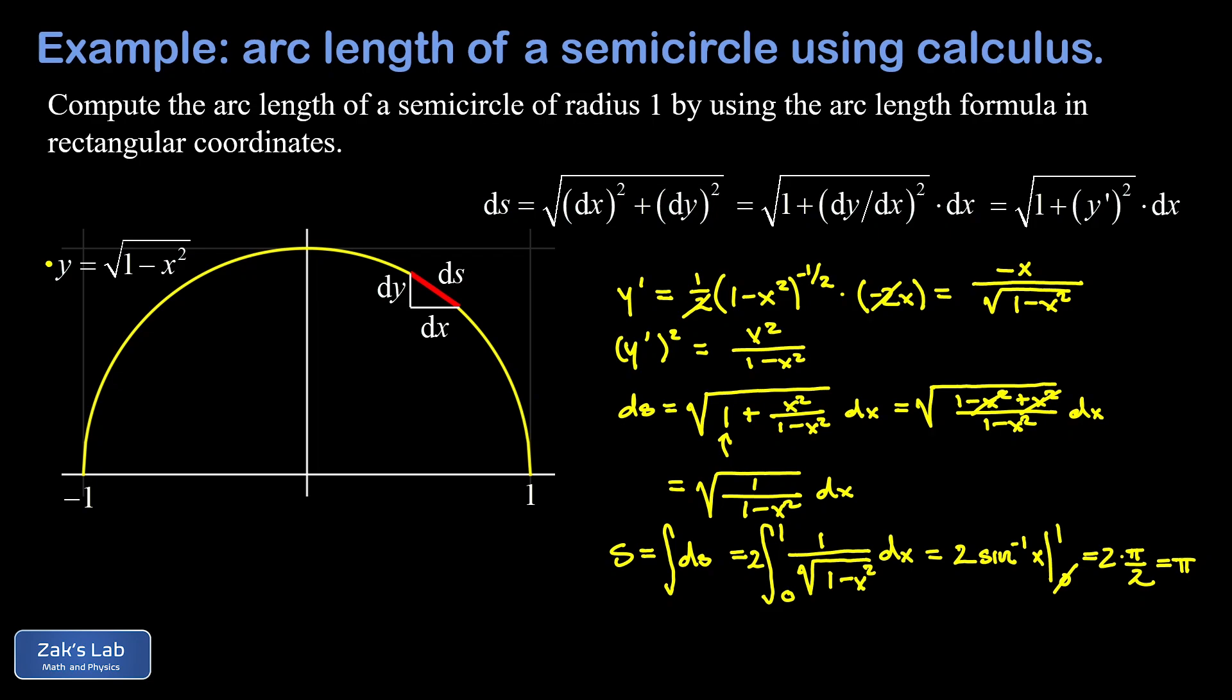Now we should check this against what we already know about geometry. We know the circumference of an entire circle is two pi r. Well, this time we're dealing with a circle that has a radius of one. And we're dealing with only one half of the circle. So that agrees. It gives us the same pi that we got by using calculus.